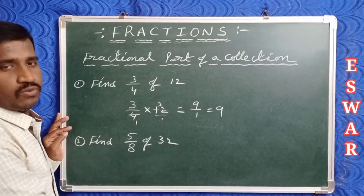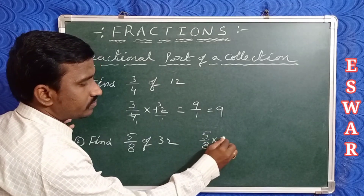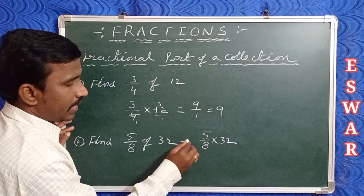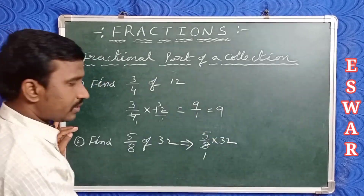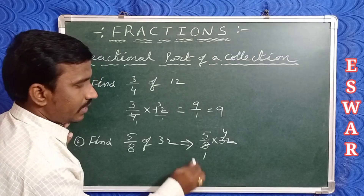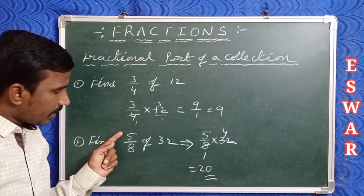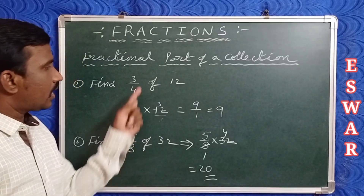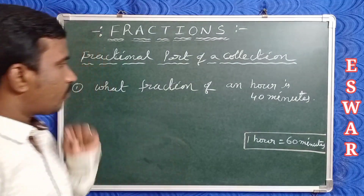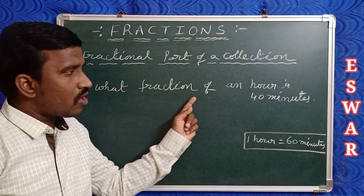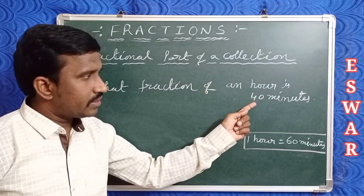Now take another example: five by eight of 32. Five by eight of 32 means five by eight multiplied by 32. Eight fours are 32, so cancel: four times five is 20. Therefore five by eight of 32 equals 20. And three by fourth of 12 equals nine, as we found before.